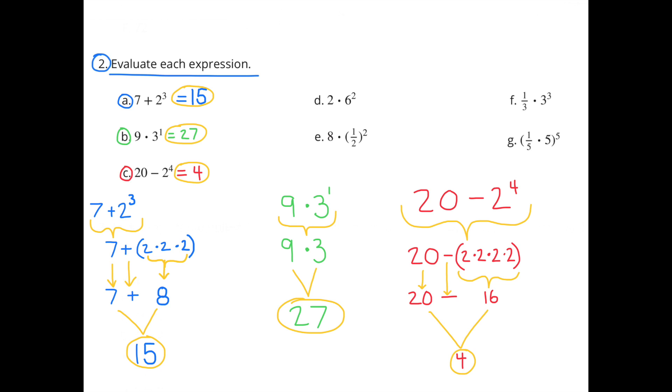C, 20 minus 2 to the fourth power. 20 minus 2 to the fourth power is the same as 20 minus 2 times 2 times 2 times 2, or 16. 20 minus 16 equals 4.